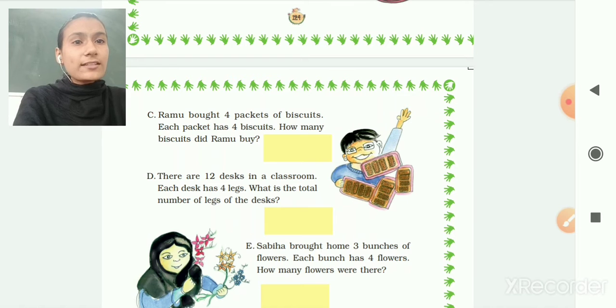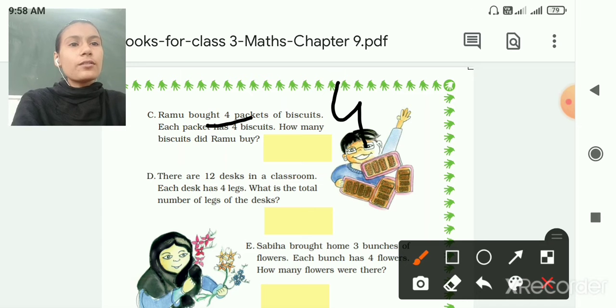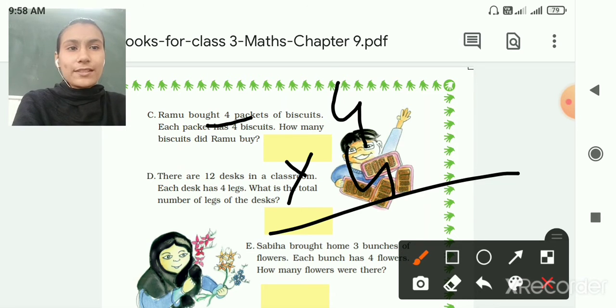So Ramu bought 4 packets of biscuits, each packet has 4 biscuits. So how many biscuits did Ramu buy? So we will multiply 4 multiply by 4. 4 4's are 16. So 16 biscuits Ramu buy.